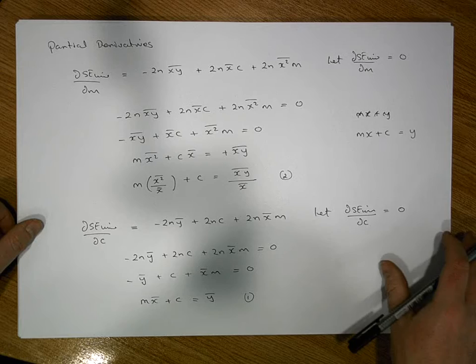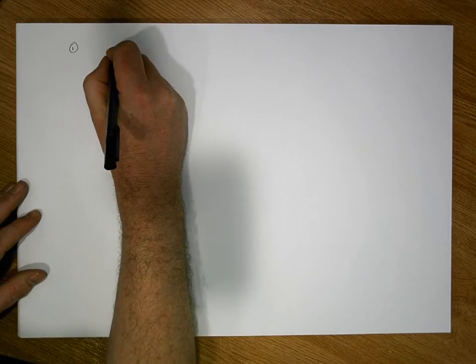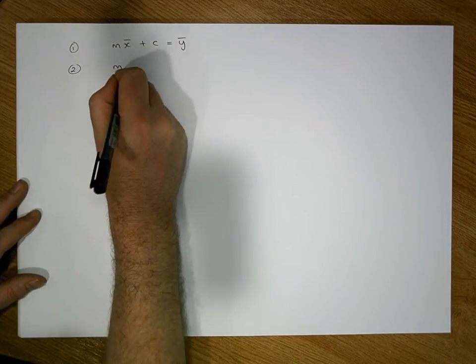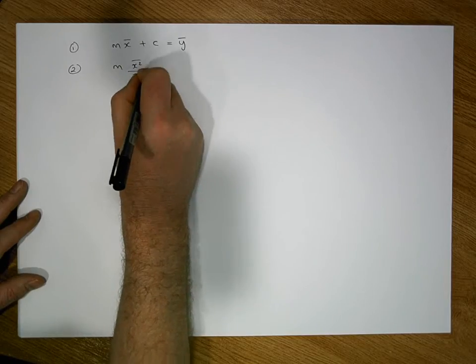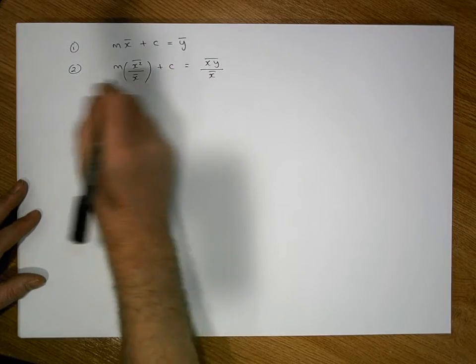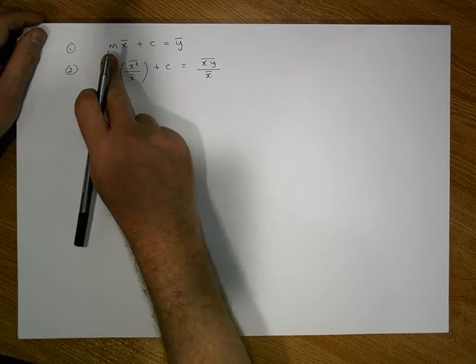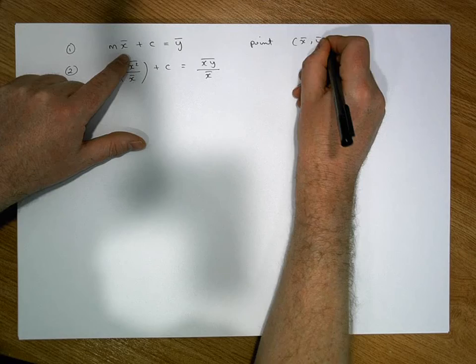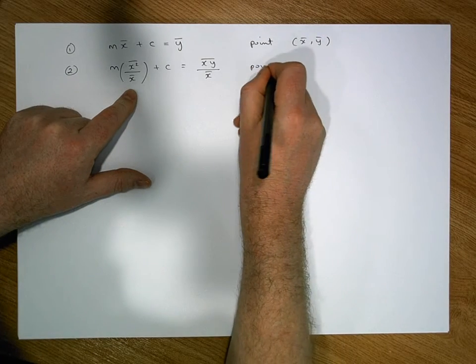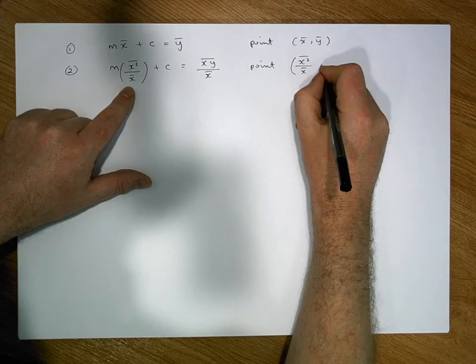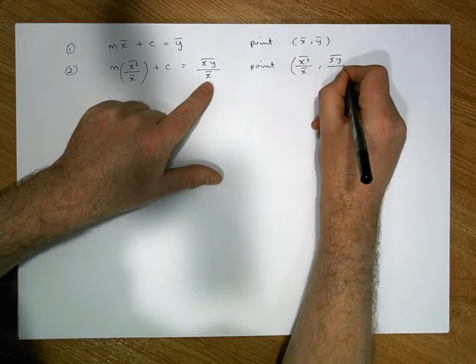Let's write down our two lines. Line 1: mx̄ + c = ȳ. Line 2: m·(x²̄/x̄) + c = xȳ/x̄. A point on Line 1 is (x̄, ȳ), and a point on Line 2 is (x²̄/x̄, xȳ/x̄).